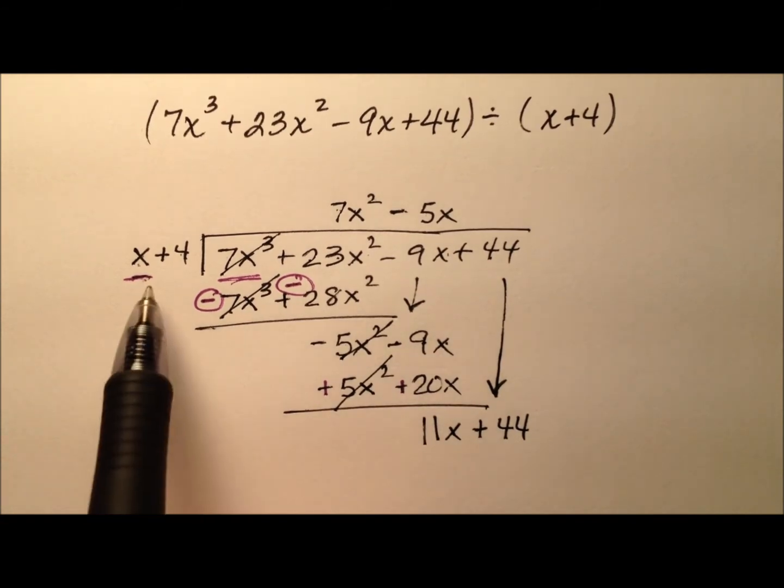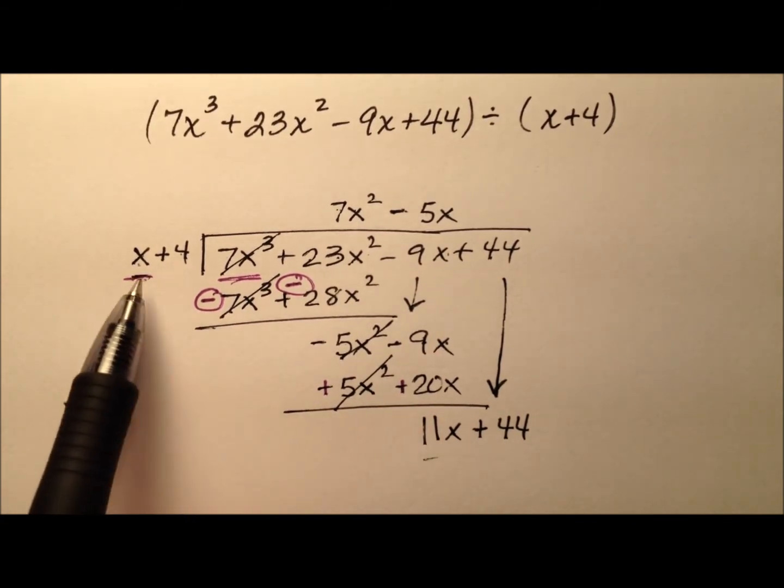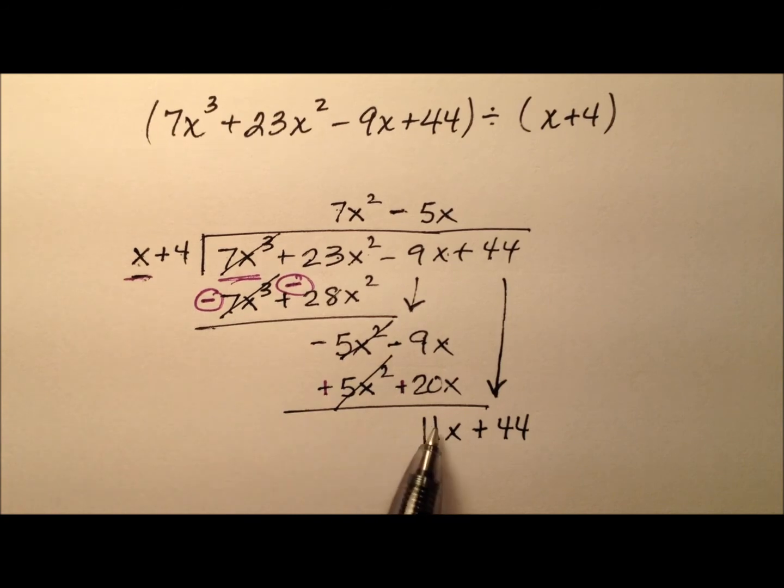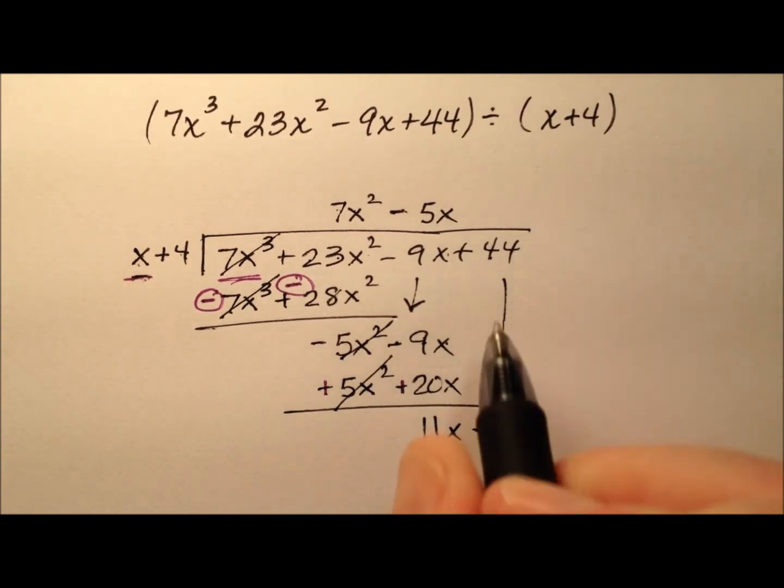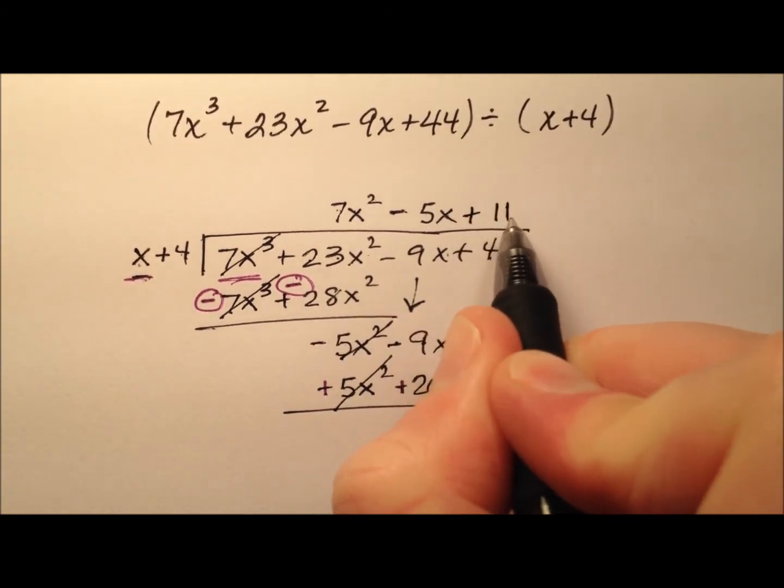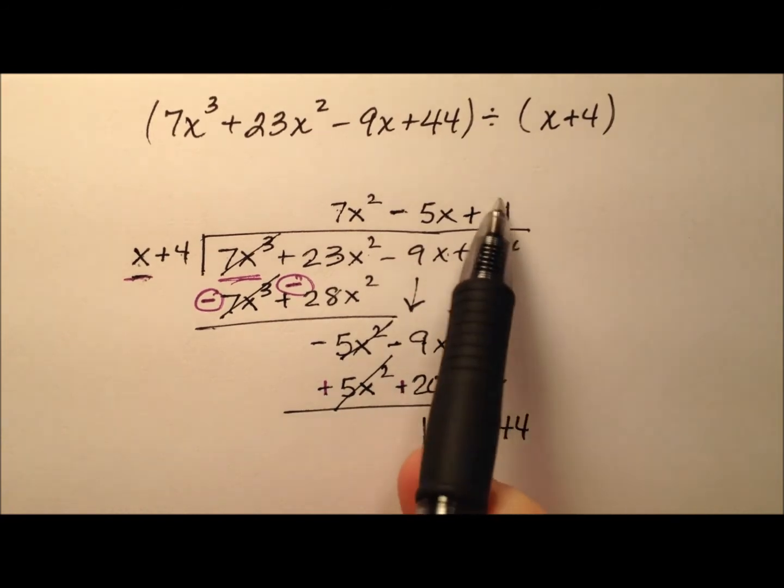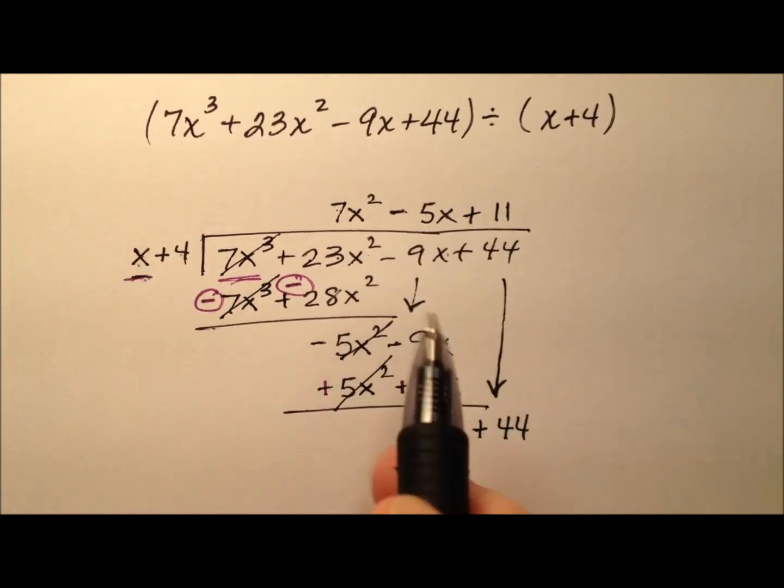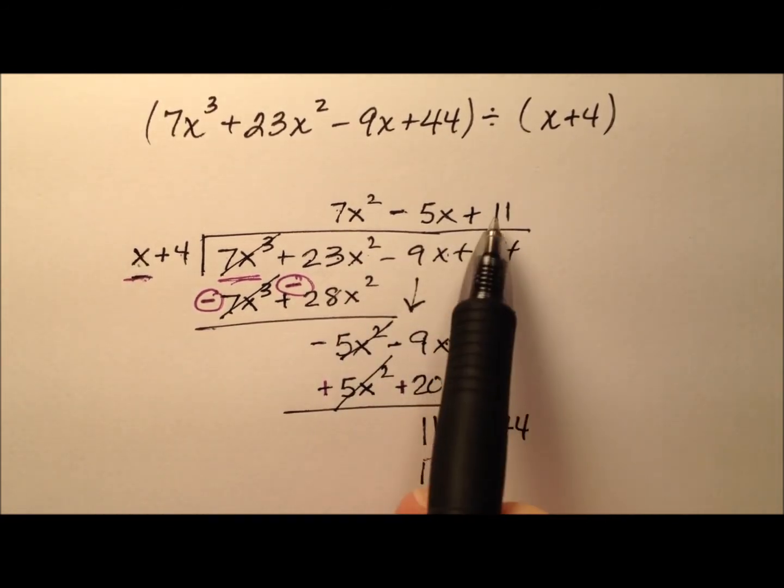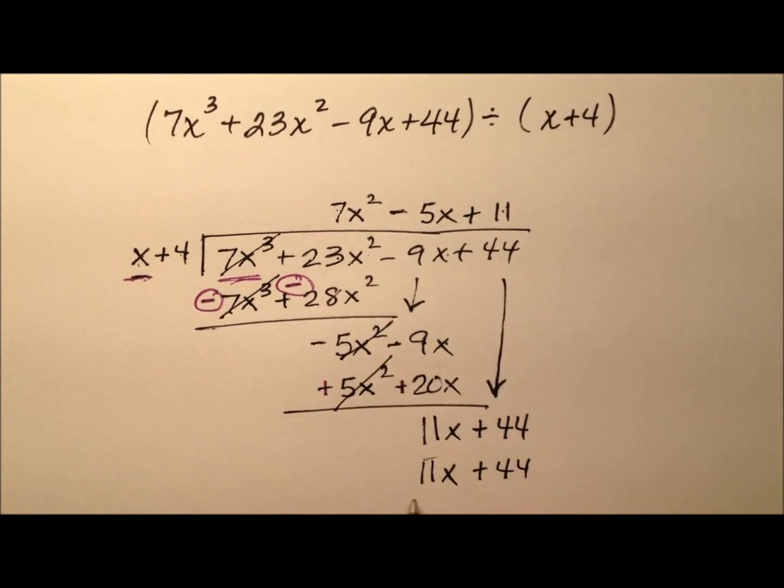And then once again look at this first term with the first term, what do I have to multiply by x to get 11x? Well that's just 11, so let's write these constants so they line up. And then let's go through and multiply, 11 times x is 11x, and 11 times 4 is positive 44.